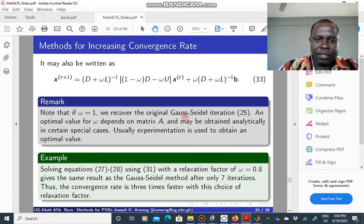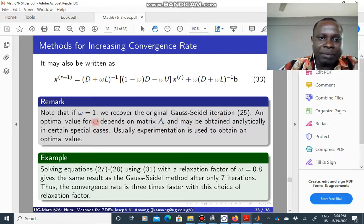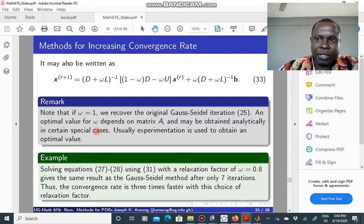If omega is 1, then you get the original Gauss-Seidel iteration. And optimal value for this relaxation depends on the matrix A, the coefficient matrix. Actually, let's put it this way: the value that you choose for this and the convergence that you get depends on the nature of A.